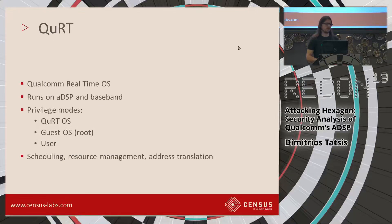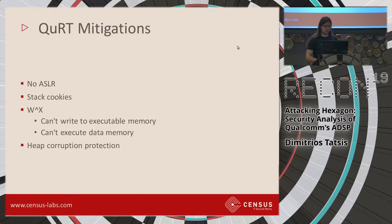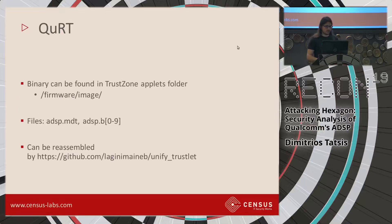QURT is Qualcomm's real-time operating system. It runs on the ADSP and baseband, and has three privilege modes: the QURT OS mode with all privileges, the Guest OS mode which is basically like a root user in Unix systems, and the user privilege mode. As an operating system it provides scheduling, resource management, address isolation, and pretty much typical OS stuff. QURT does not employ ASLR, but it uses stack cookies, has a form of write-XOR-execute, and also has a form of heap corruption protection. The QURT binary can be found under /firmware/image.